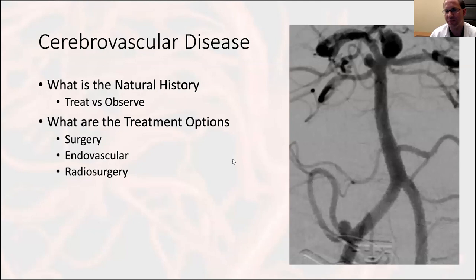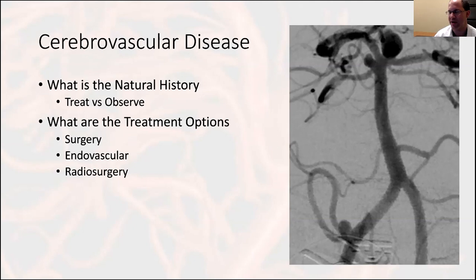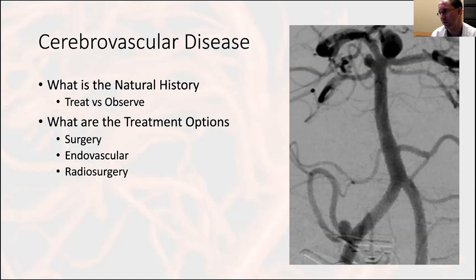A very important principle when looking at cerebrovascular disease: anytime you see a problem — whether it's an aneurysm, an AVM, or a cavernous malformation — you take a step back and ask, what is the natural history of this problem? That predicates whether you watch or treat it. Then what are the treatment options? Surgical options, endovascular options, and for other pathology, radiation. Always think in this framework: do I need to treat it, and if so, what are my options?